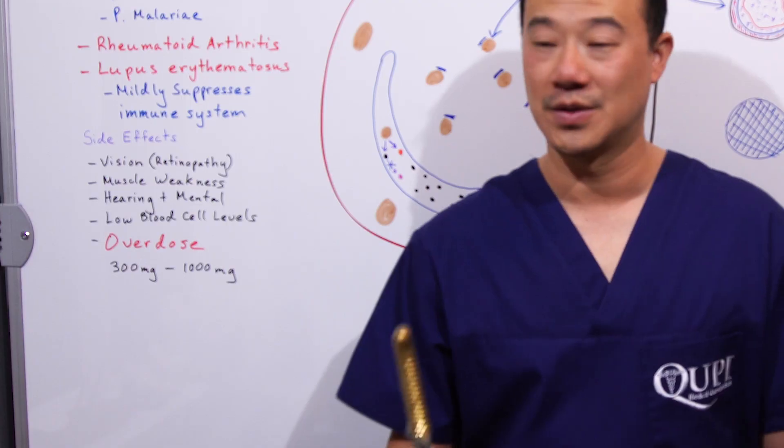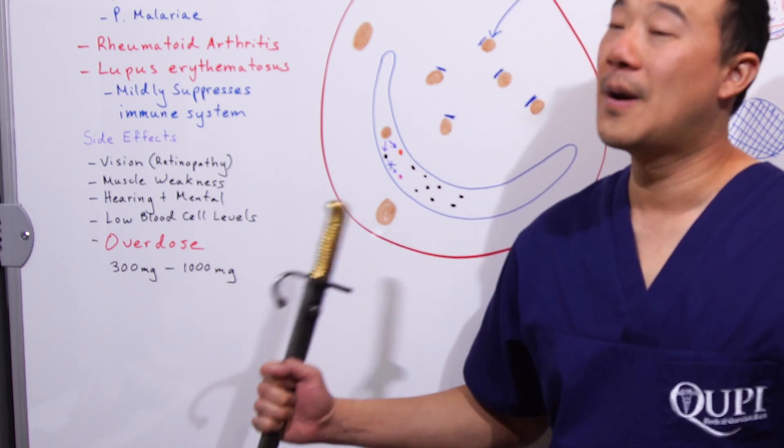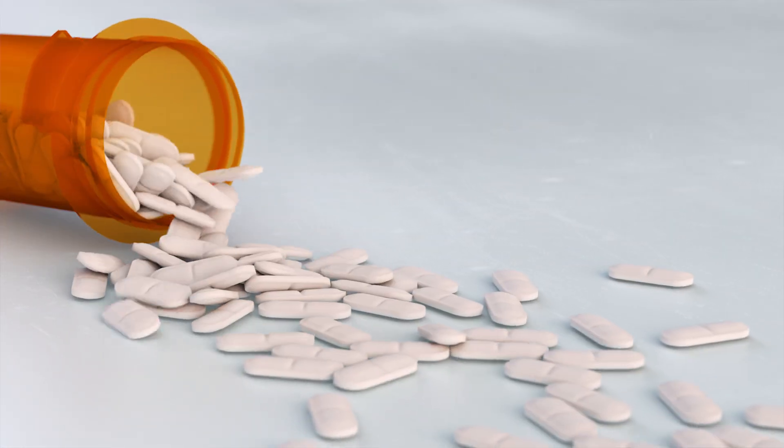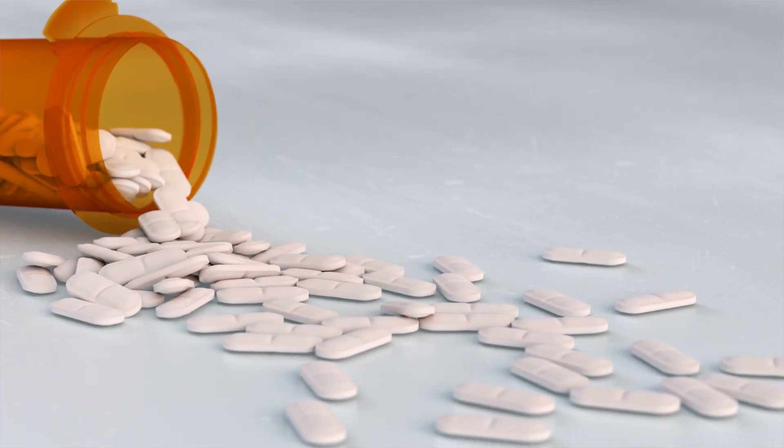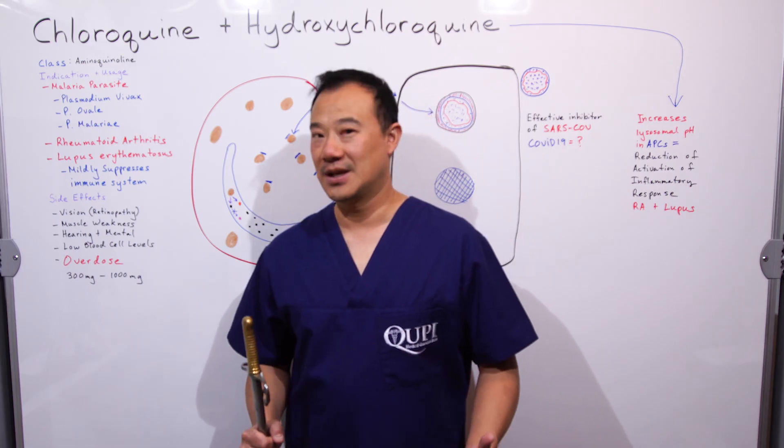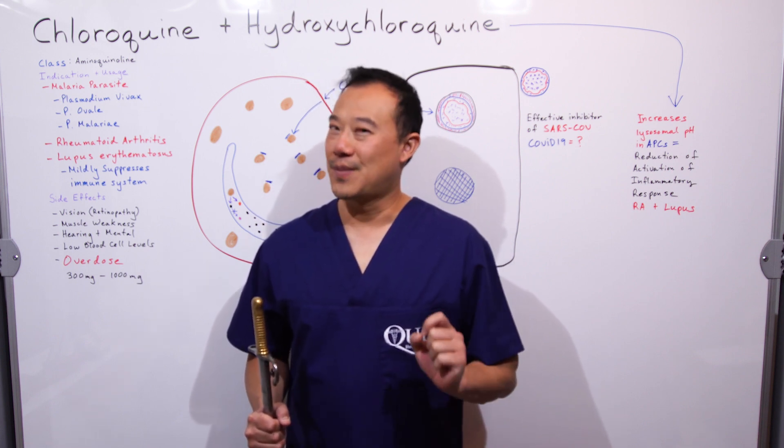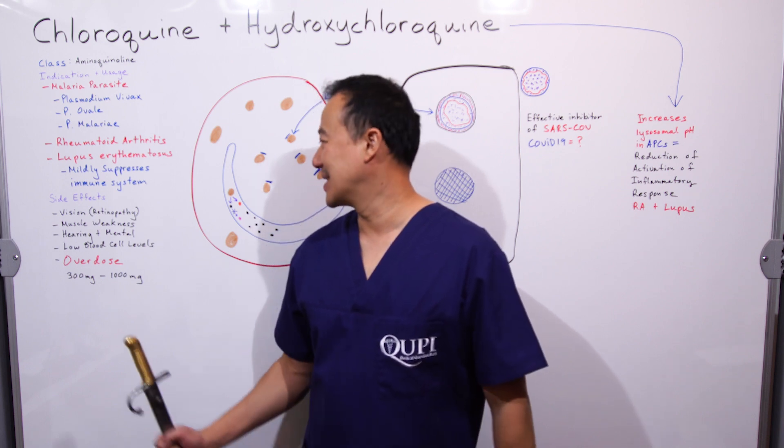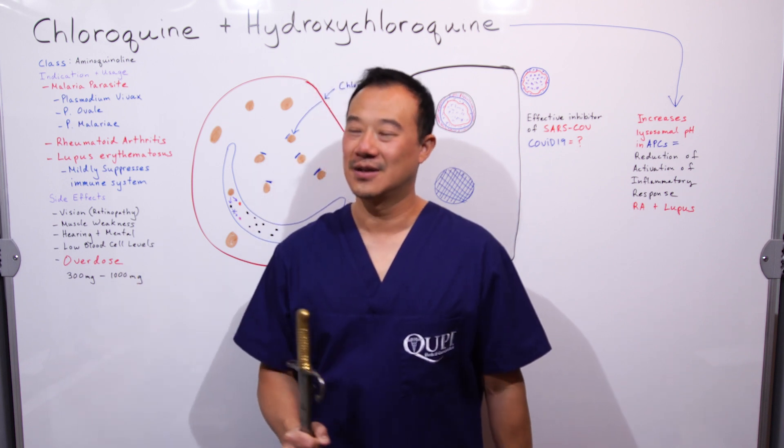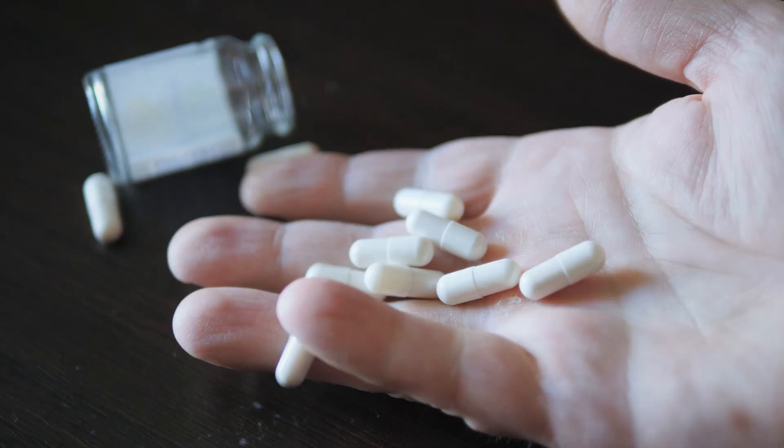Overdose happens over one gram. This medicine can be used as an anti-parasitic in aquarium fish tanks, but those packets come in 10 gram tablets. 10 grams is 10 times the dose that a human can have—it's toxic, it's lethal, and you can die from this.